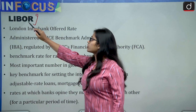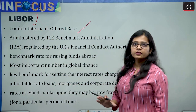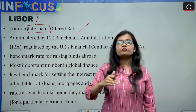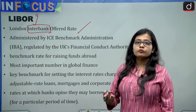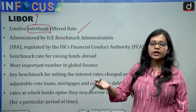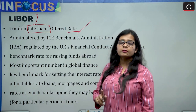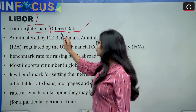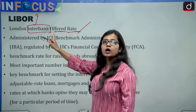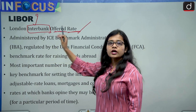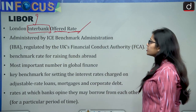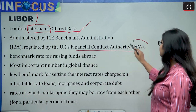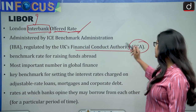LIBOR stands for London Interbank Offered Rate. From the name, 'Interbank' means from one bank to another. When one bank wants to take a loan from another bank for a short period of time — from overnight to one year — the rate offered is known as LIBOR. It was administered by the ICE Benchmark Administration (IBA) and regulated by the UK Financial Conduct Authority (FCA).